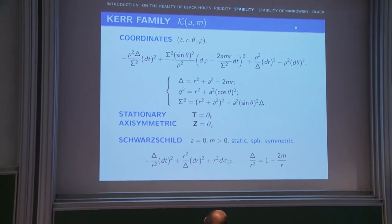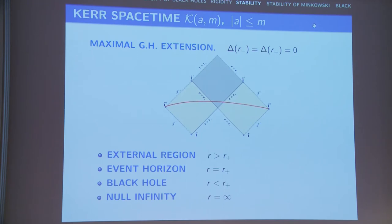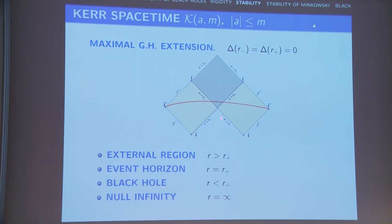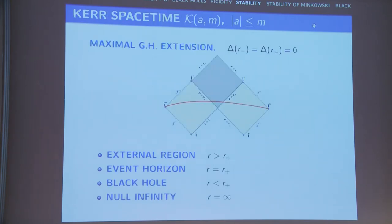The Kerr solution is stationary and axisymmetric; when parameter a equals zero, we get Schwarzschild. Important values of r: r-plus is the solution of delta equals zero, giving the horizon. r greater than r-plus is the exterior, r less than r-plus is the interior, r equals infinity is the boundary at infinity via conformal compactification. r-minus doesn't appear here as it concerns the interior.